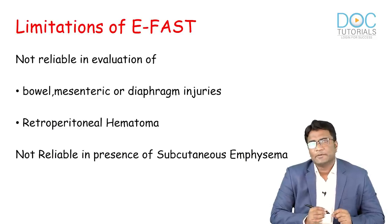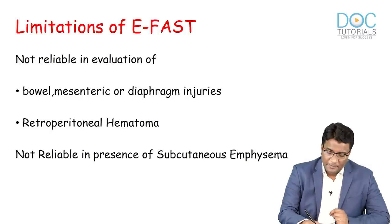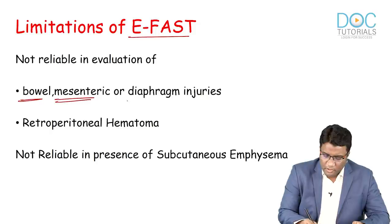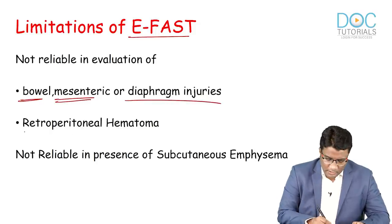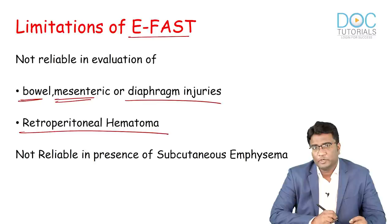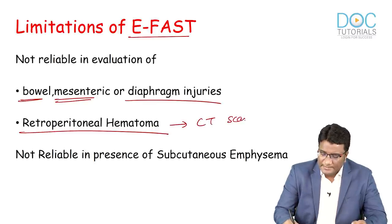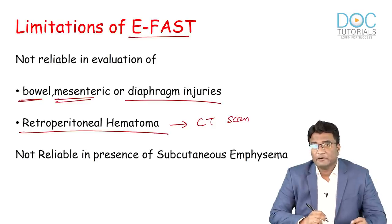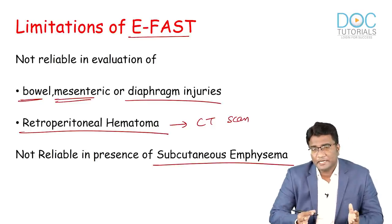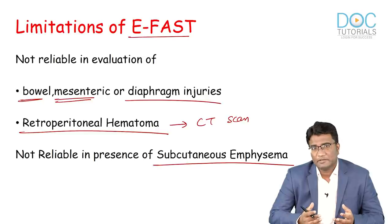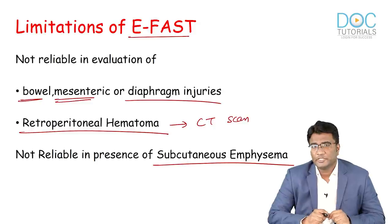Important limitations of eFAST: it is not reliable for evaluating bowel, mesenteric, or diaphragm injuries, and is not efficient for retroperitoneal hematomas — these are better evaluated by CT scan. Also, when there is large subcutaneous emphysema on the anterior abdominal wall or anterior chest wall, the field of view is compromised and eFAST may not give reliable results.